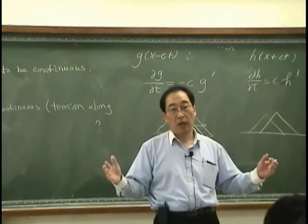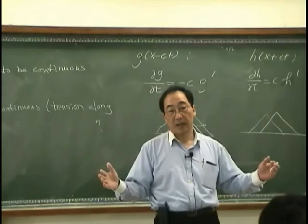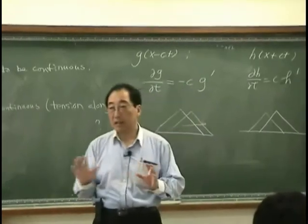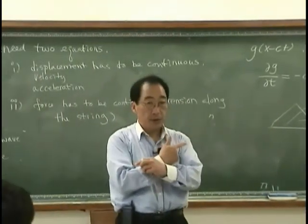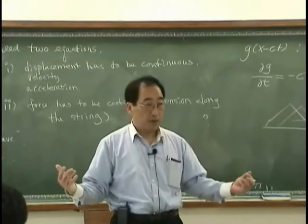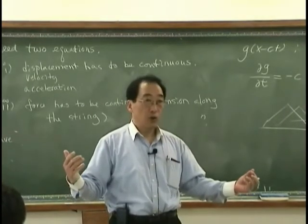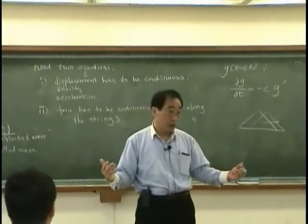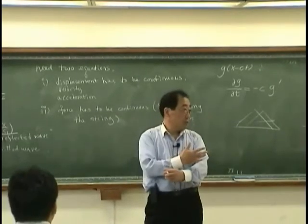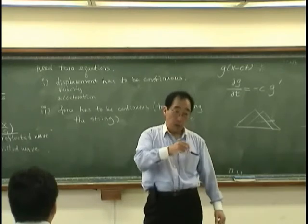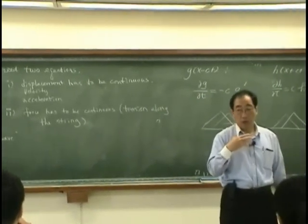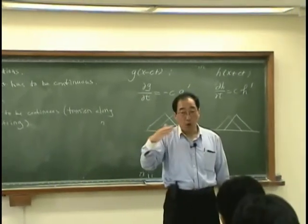Sine n pi over l x sine 2 pi fn t, that can be regarded as two traveling waves. So general form of a traveling wave would be G1(x - ct) plus h(x + ct), because there are two right going wave and left going wave. And then we pick up the special case. In other words, when we have right, harmonic right going wave, what would happen?